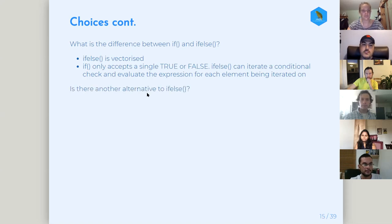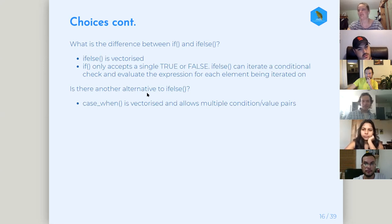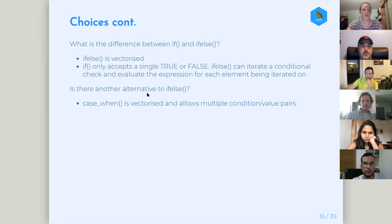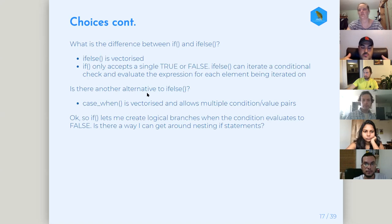Is there an alternative to if_else? For tidyverse, there's the case_when statement, which allows you to enjoy that vectorized if_else but also succinctly put in multiple condition-value pairs. You can say, if it's greater than seven, do this — it uses the tilde for 'then.' It allows you to concisely express conditional actions to take based on what the conditional checks return. It's a little more convenient to use and pretty powerful.